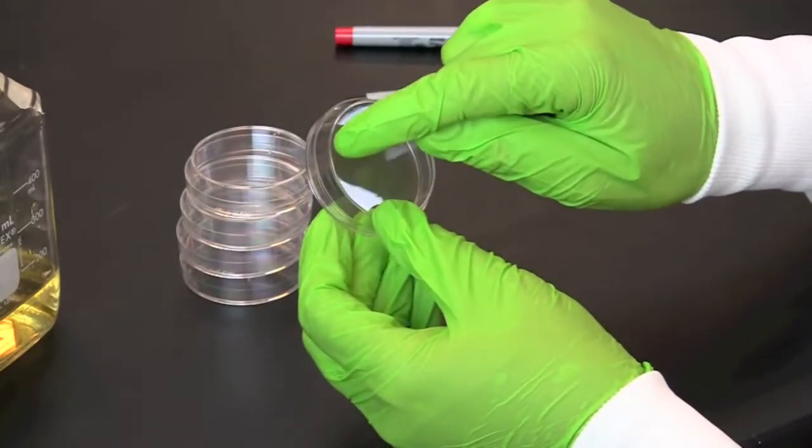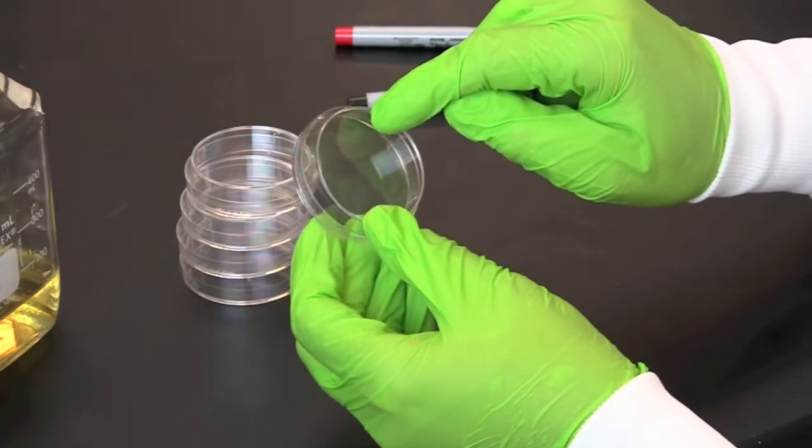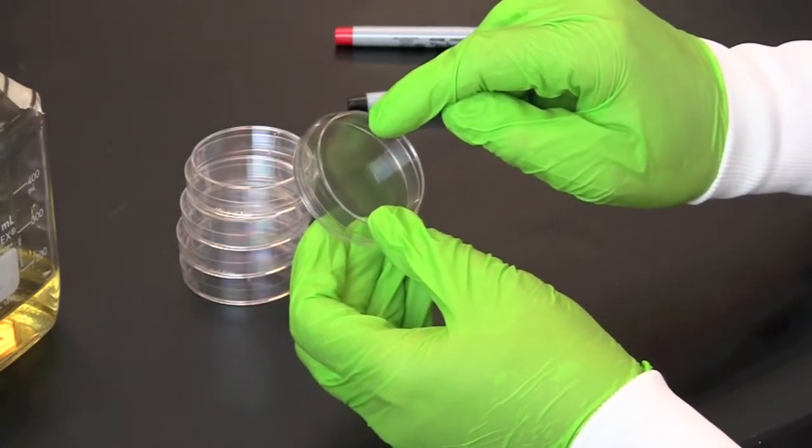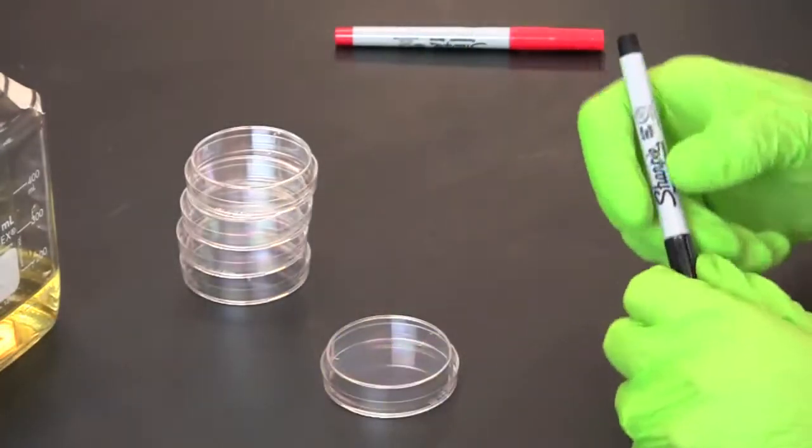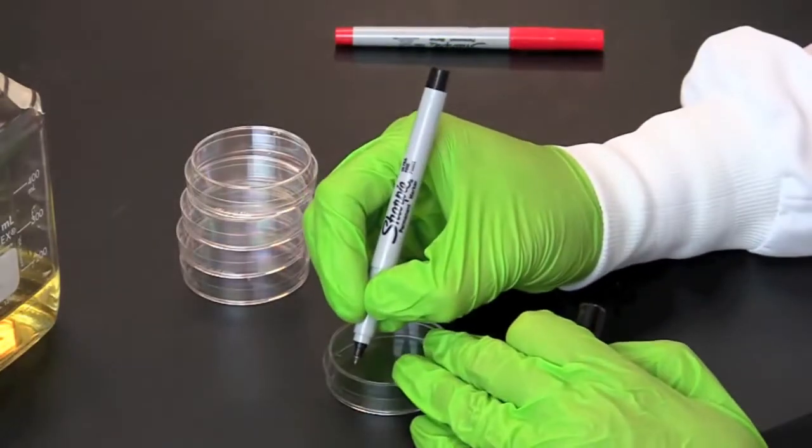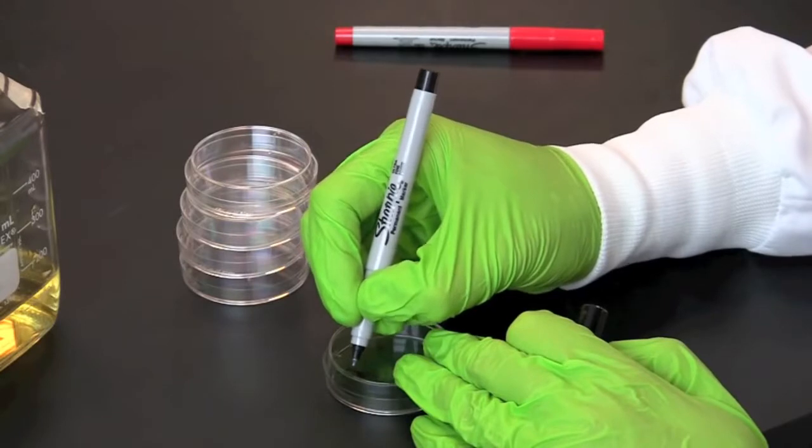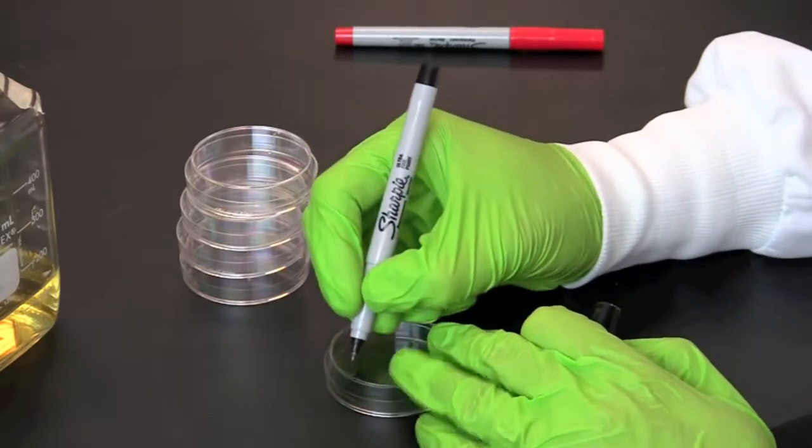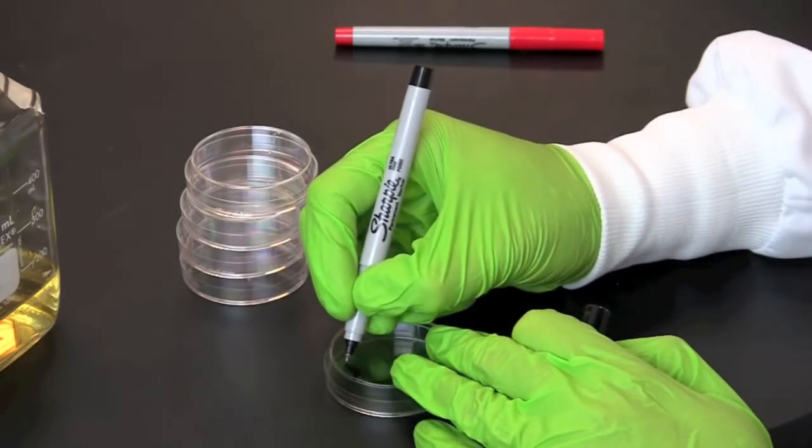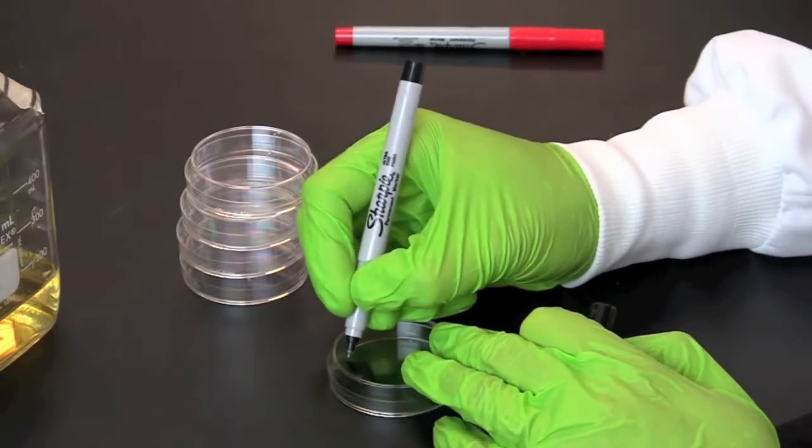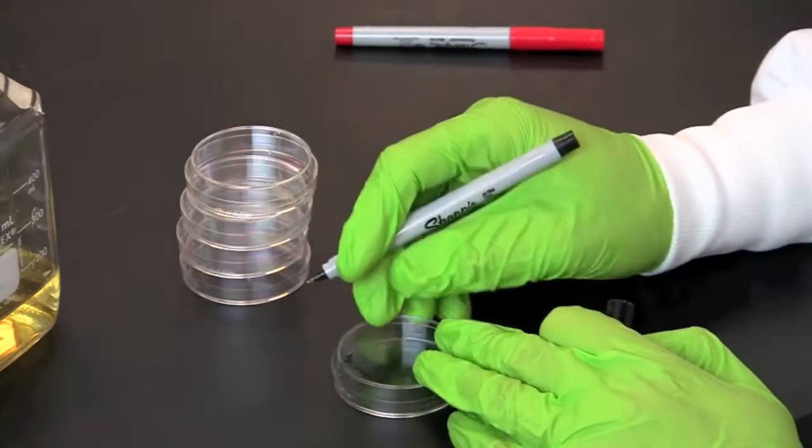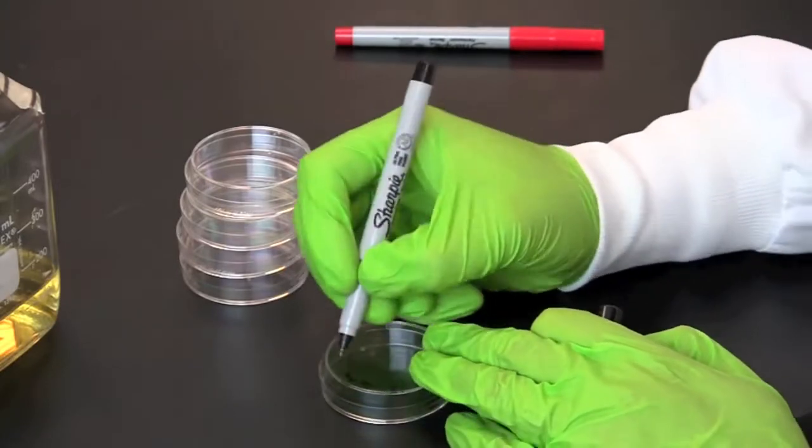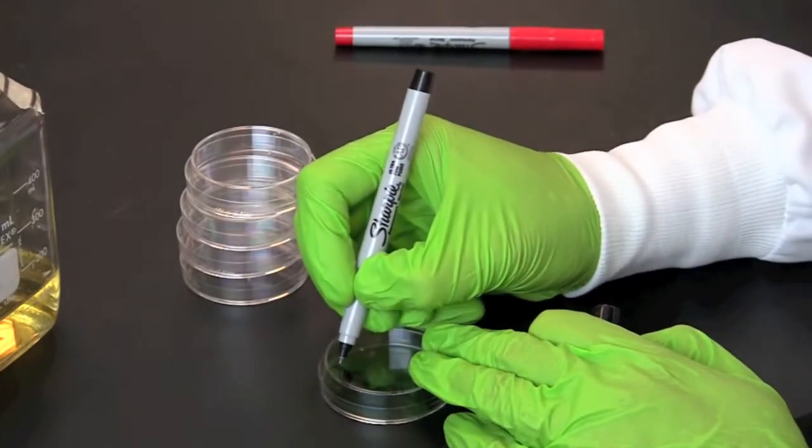Labeling the plates is done in an arch along the outer edge of the base. The information that is recorded on the plate includes the type of agar LB, the type of antibiotic AMP for ampicillin, ARA for arabinose, your initials, and the date.